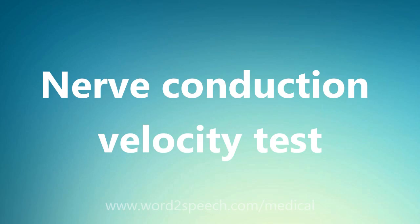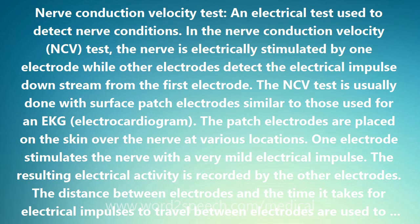Nerve Conduction Velocity Test: an electrical test used to detect nerve conditions. In the Nerve Conduction Velocity NCV Test, the nerve is electrically stimulated by one electrode while other electrodes detect the electrical impulse downstream from the first electrode.